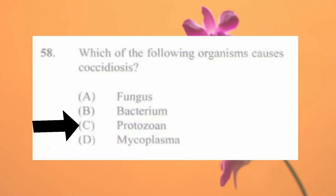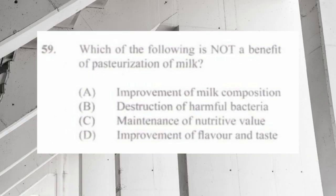Question number fifty-eight: which of the following organisms causes coccidiosis? a) fungus, b) bacterium, c) protozoan, d) mycoplasma. The answer is c) protozoan. Coccidiosis is a common disease that affects both poultry and rabbits.